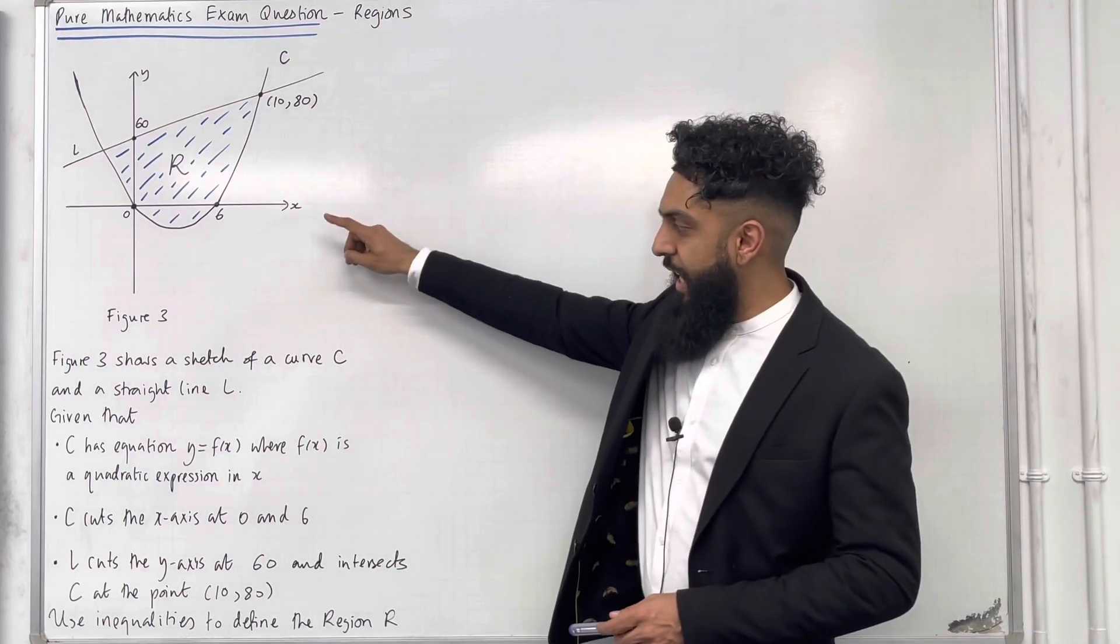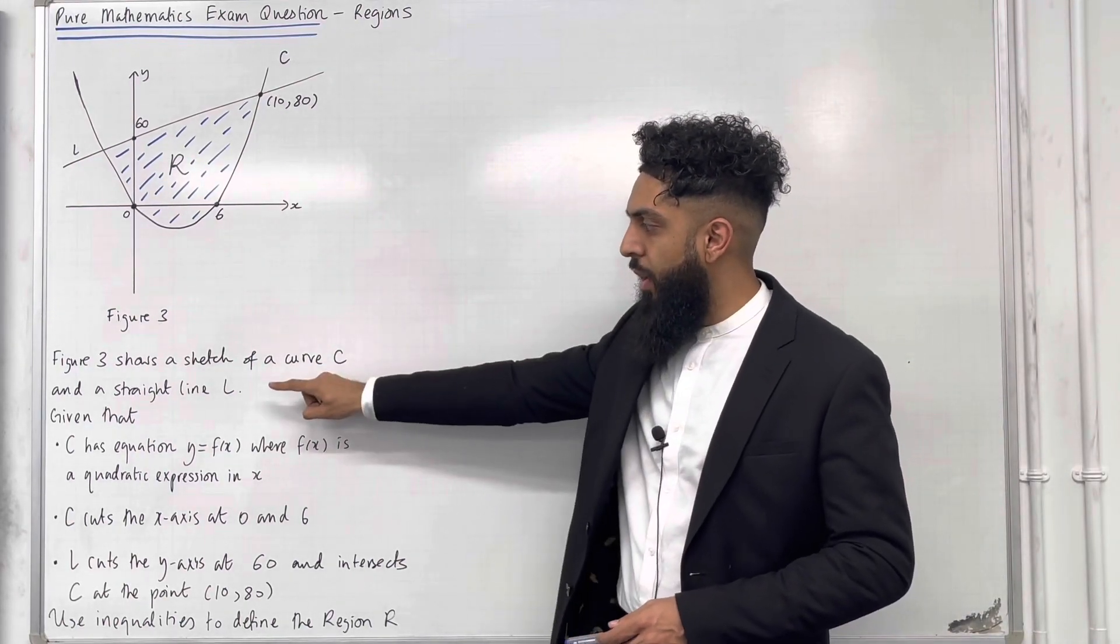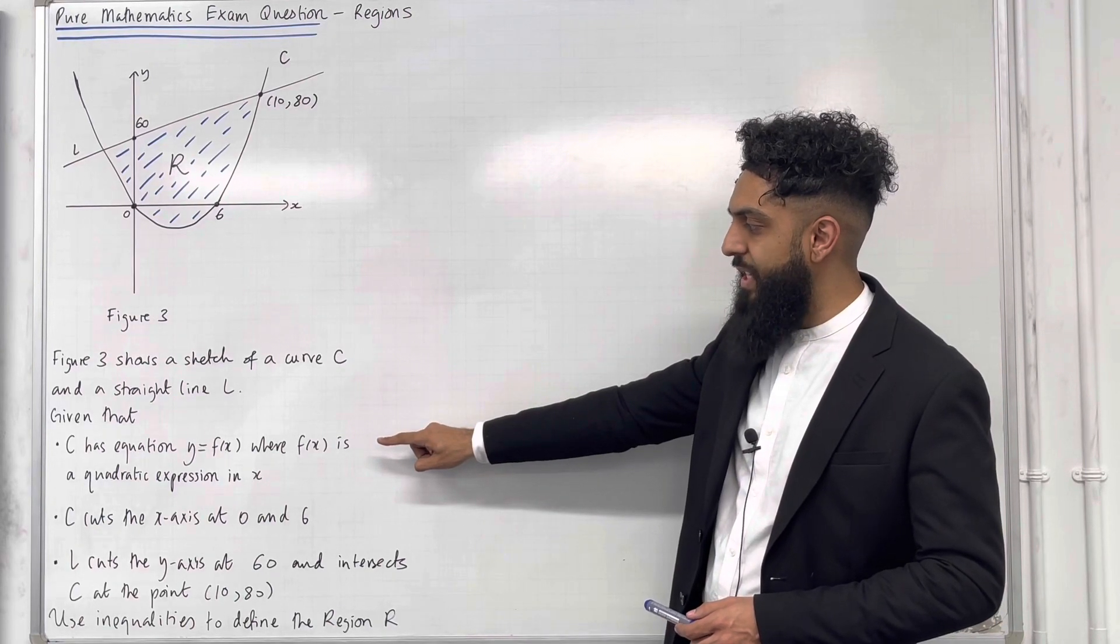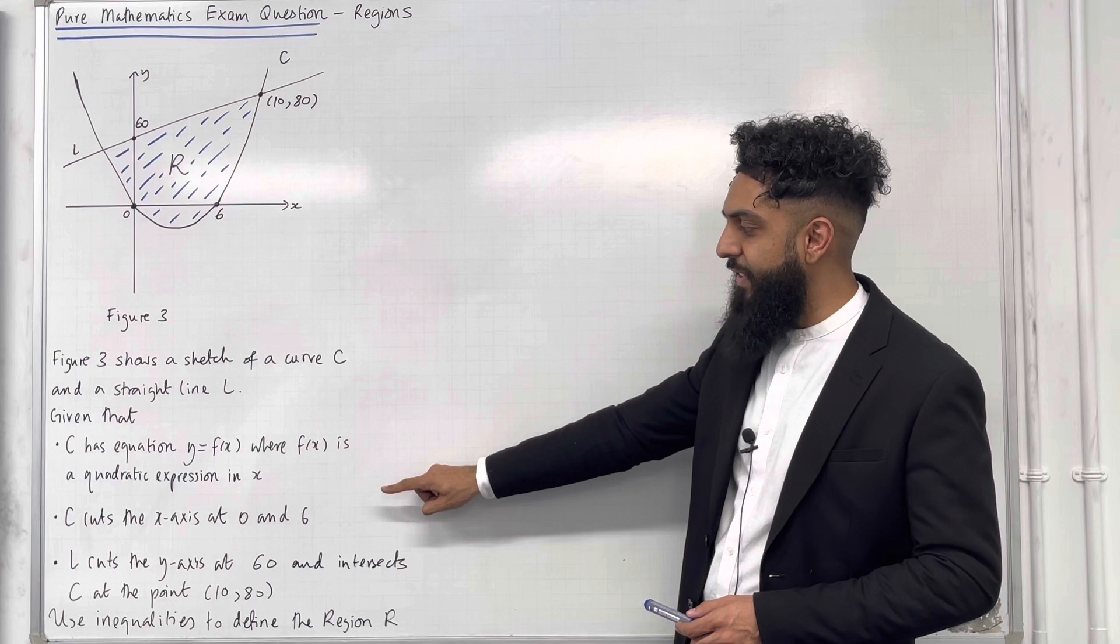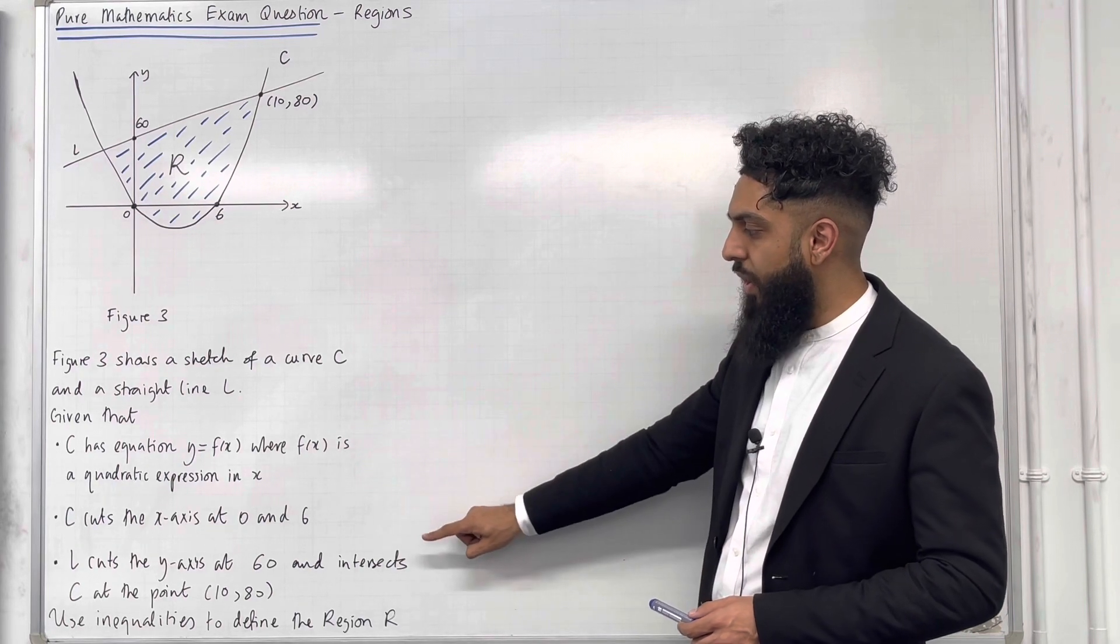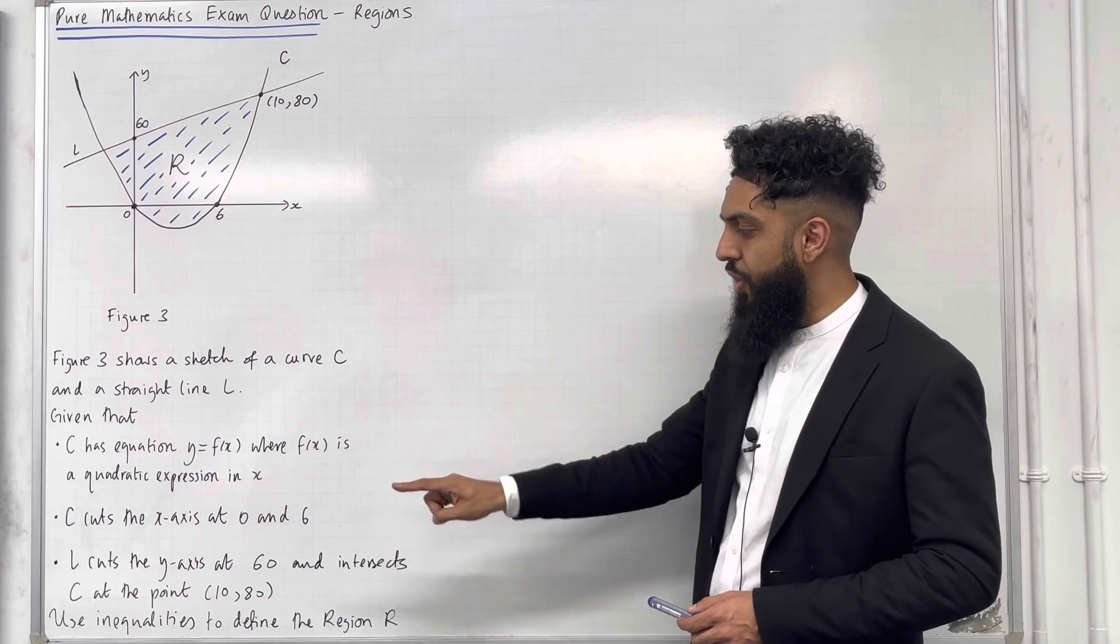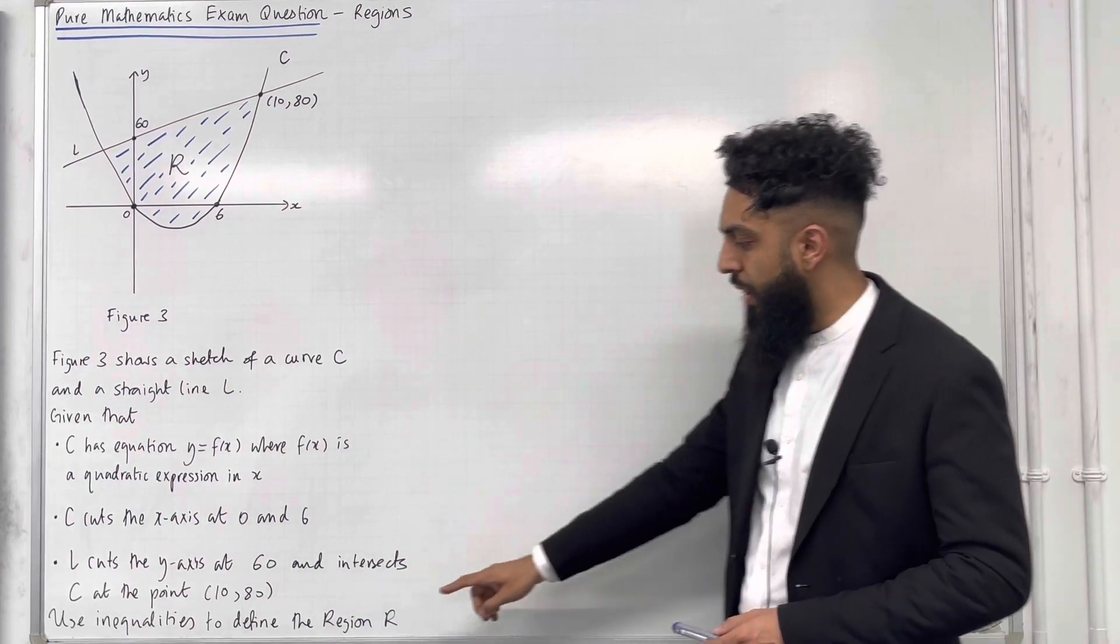Figure 3 shows a sketch of a curve C and a straight line L. Given that C has the equation Y equals F of X, where F of X is a quadratic expression in X, C cuts the X axis at 0 and 6. L cuts the Y axis at 60 and intersects C at the point 10, 80. Use inequalities to define the region R.